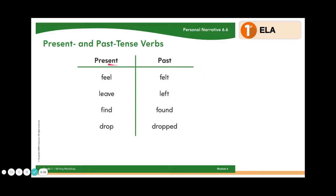Let's take a look at some examples. The present tense verb would be feel, but if you wanted to change it to the past, you would say felt. Present would be leave; past would be left. Present would be find; past would be found. Present would be drop; past would be dropped. Whenever you're writing your personal narrative, be sure that you're using the correct verbs or action words.